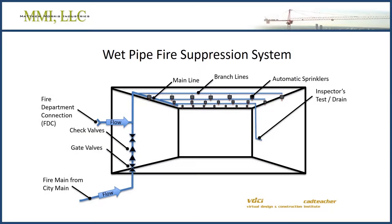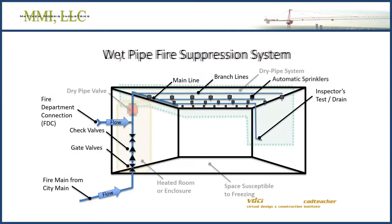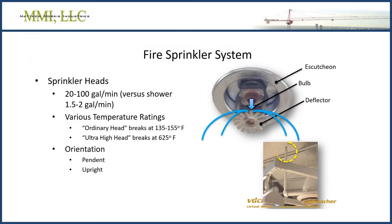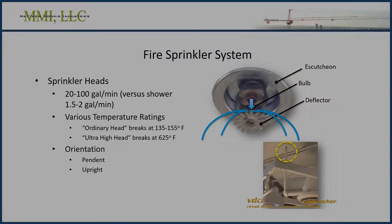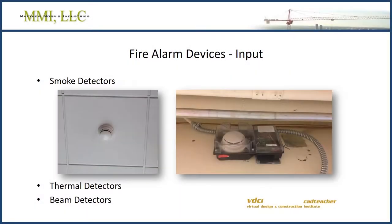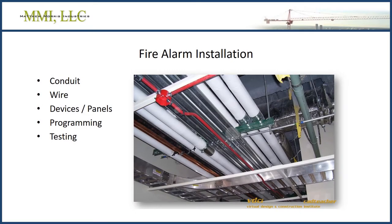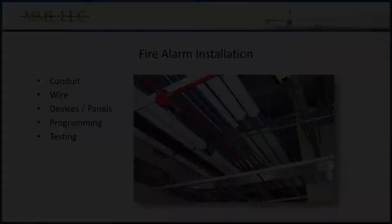For fire suppression, we will look at wet pipe and dry pipe fire suppression systems, as well as the fixtures involved. We will also discuss how we monitor and detect fires in a building and look at the many parts and pieces involved in the fire alarm system.